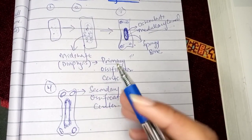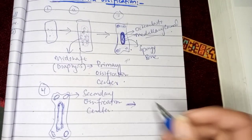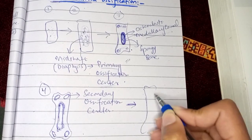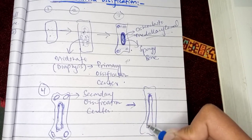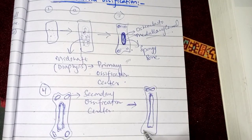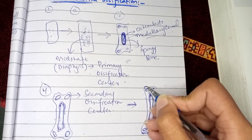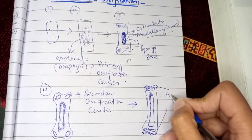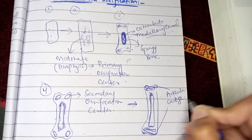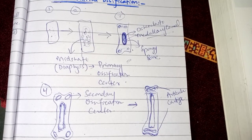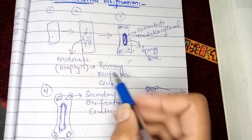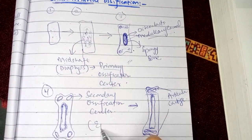The bone in both areas increases. The cartilage eventually remains only as a very thin rim referred to as articular cartilage, and a very small epiphyseal plate is present between the diaphysis and the epiphysis. The diaphysis was the primary ossification center and the epiphysis was the secondary ossification center.